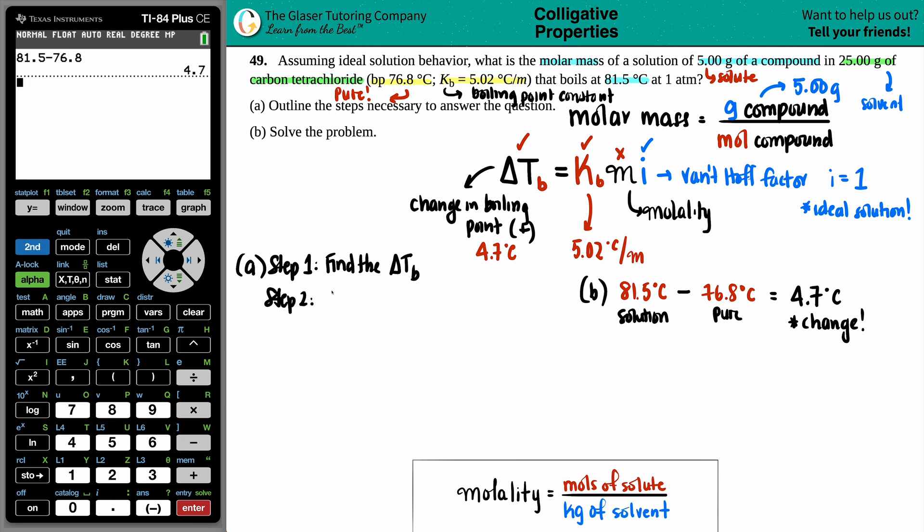Step two is we're going to solve for the molality. Delta Tb equals Kb times M times i. So 4.7 equals 5.02 times X times 1. Anything times one is essentially the same, so we divide both sides by 5.02. This cancels out, and we get X equals the molality: this number divided by 5.02, which is 0.9363 molality. Don't get this confused with capital M, which is molarity.